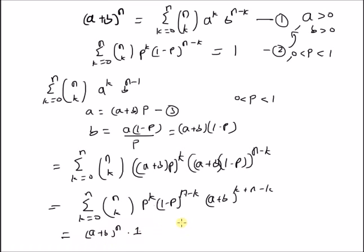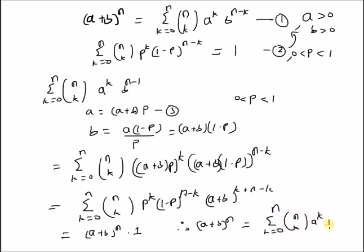Therefore, (a + b)^n equals the summation from k = 0 to n of n choose k times a^k times b^(n−k). Hence, the binomial theorem is proved. Thanks for watching.